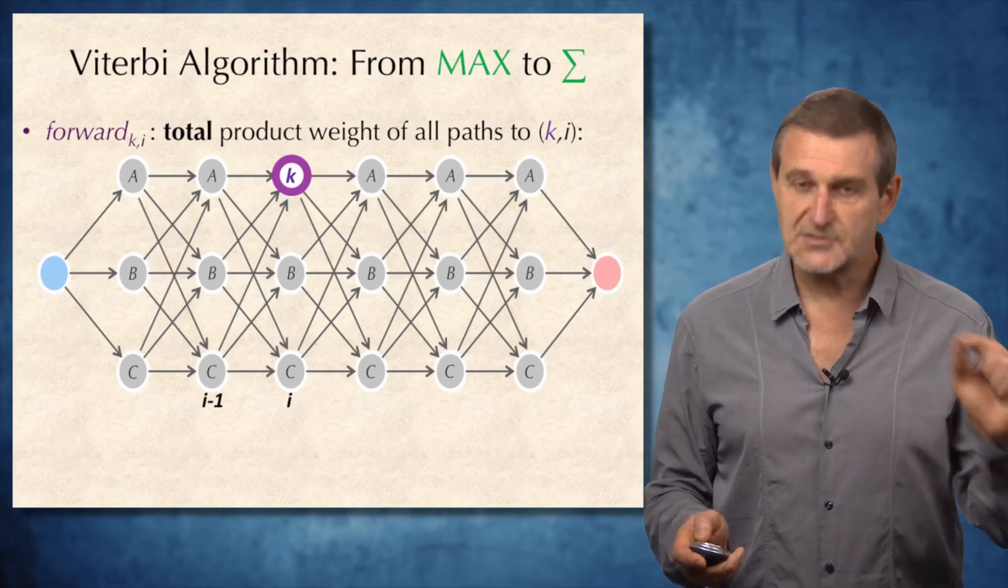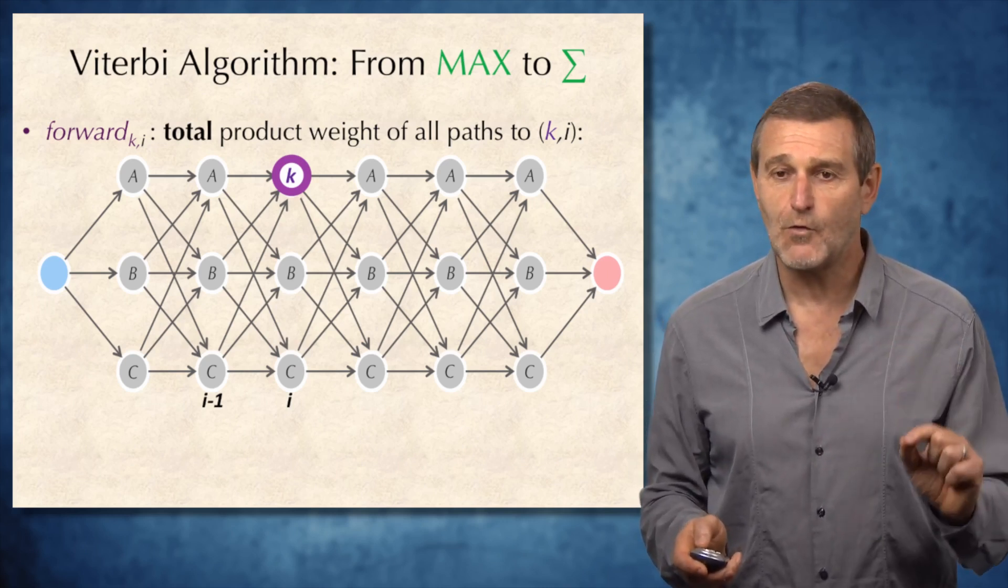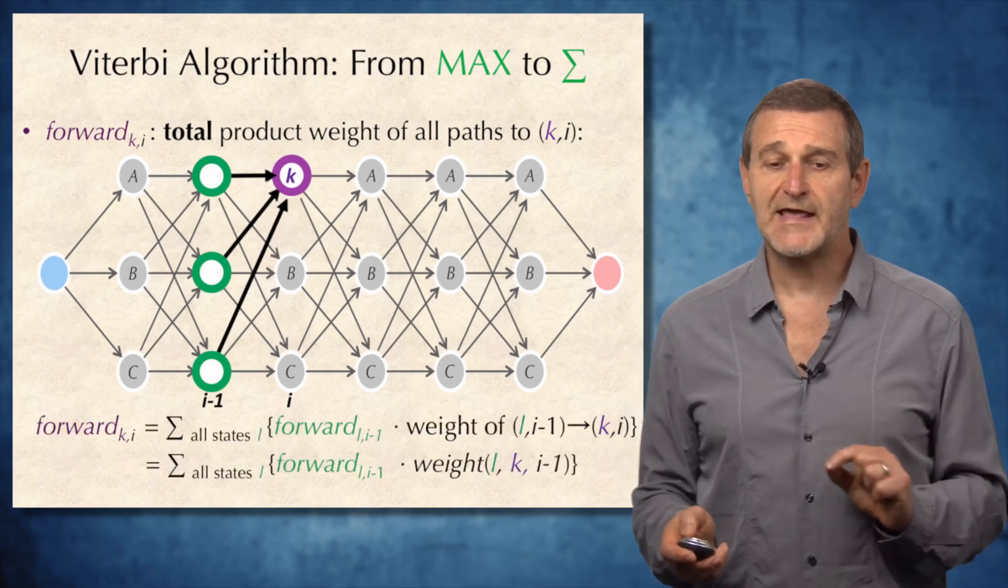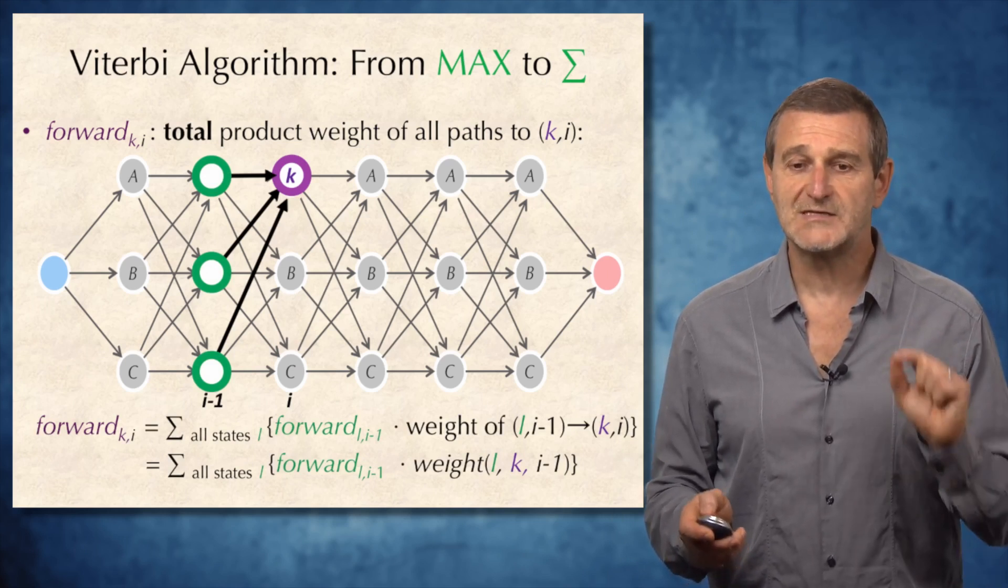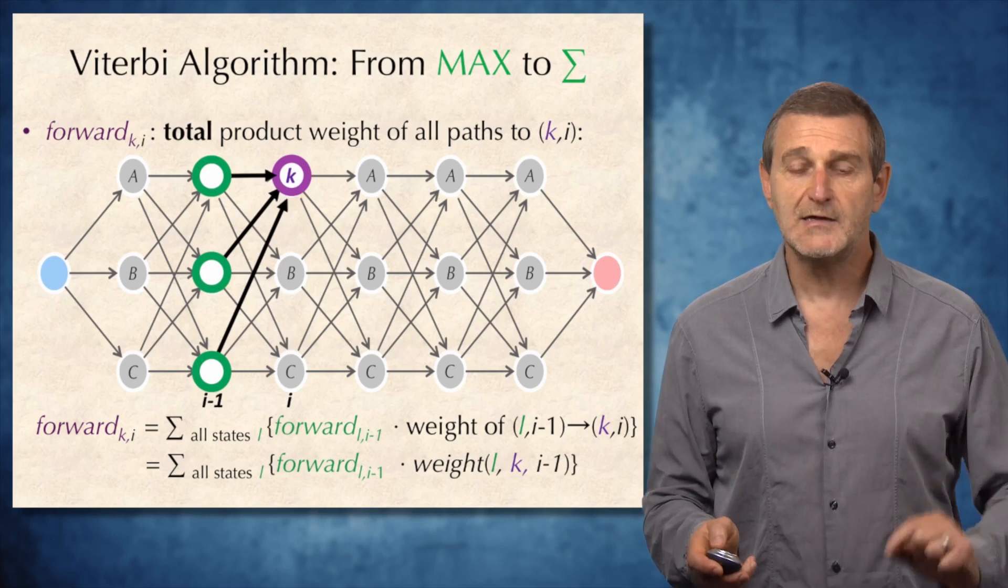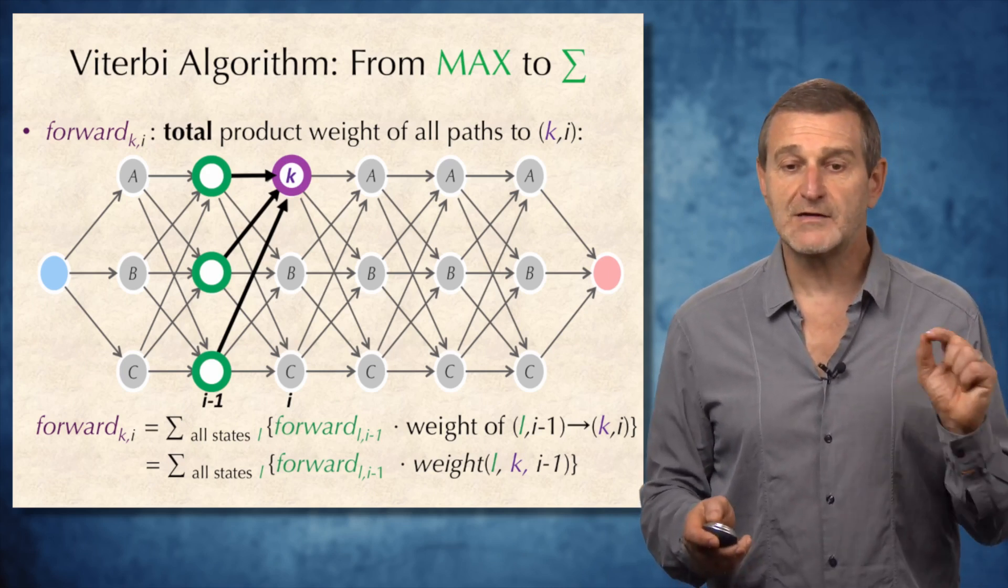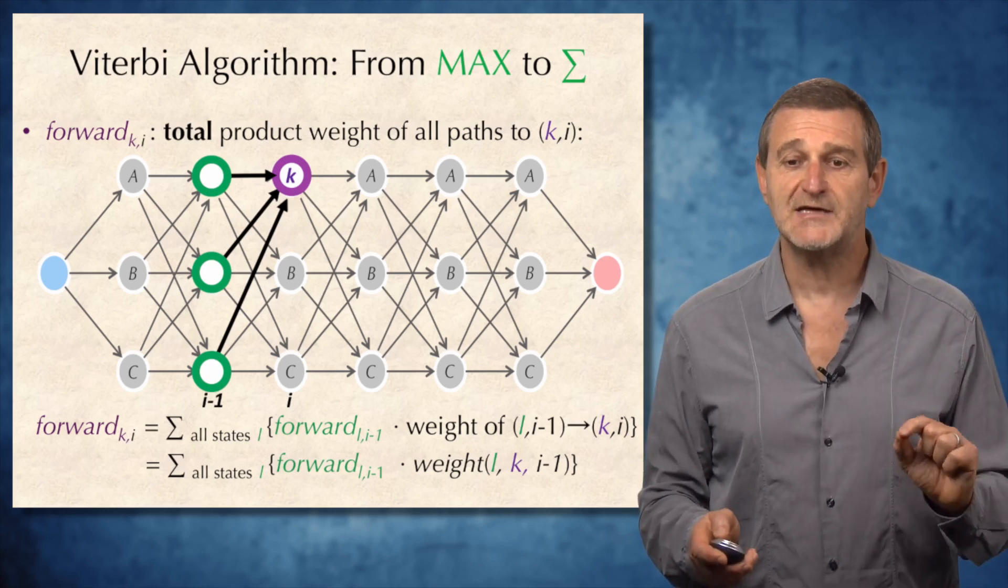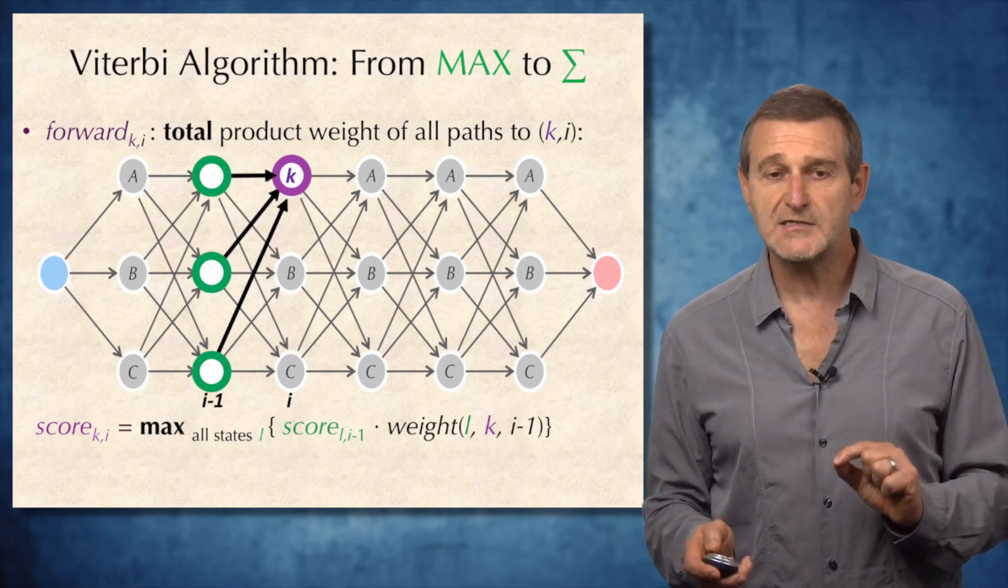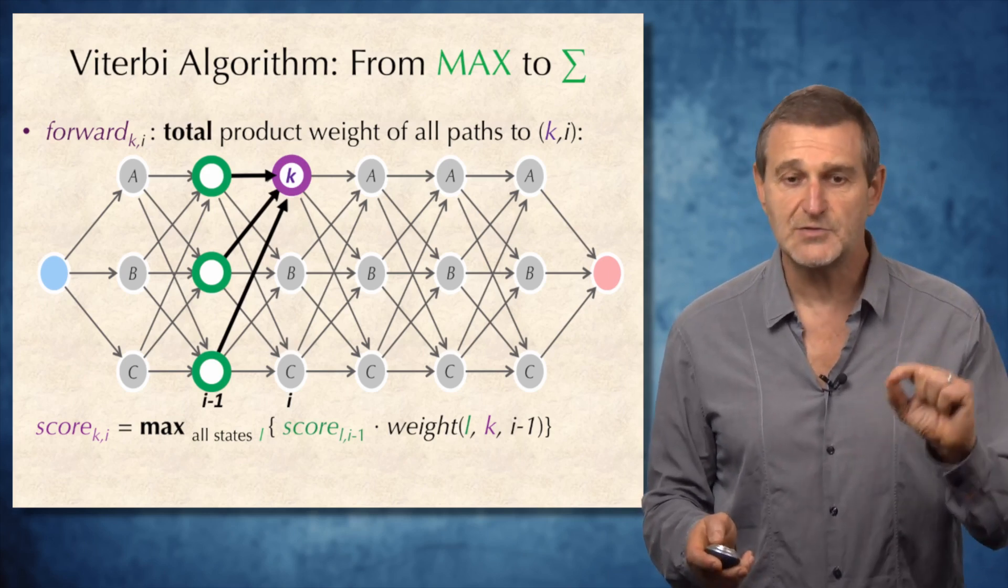So, let's try to modify the Viterbi algorithm and introduce a variable forward_k,i, which is total product weight of all paths to the node k,i. Here are all predecessors of node K. And therefore, forward_k,i equals to the sum through all possible states of the values forward_L,i-1 in the previous column, multiplied by the weight of the edge from the previous column to node K, which is simply sum through all states L, forward_L,i-1 multiplied by the weight of the edge L,K,i-1. And the only difference between this recurrence for forward_k,i and score_k,i is the change of maximum into the sum.